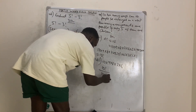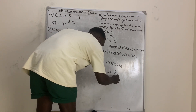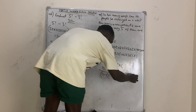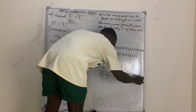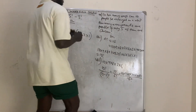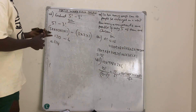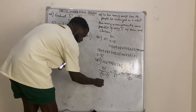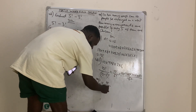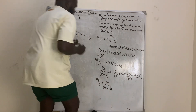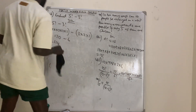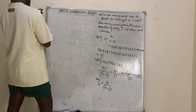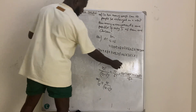Using the permutation formula: it is 10 factorial over (10 minus 5) factorial, which is 10 factorial over 5 factorial. Expanding: 10 times 9 times 8 times 7 times 6 times 5 factorial over 5 factorial — the 5 factorials cancel. Arrangement is simply permutation: arranging 5 people out of 10 gives the same answer whether by analysis or formula.